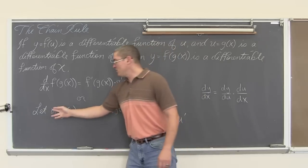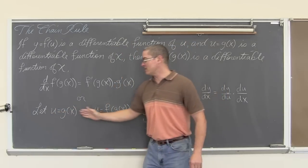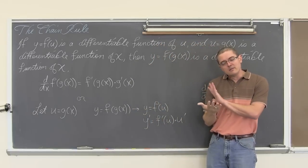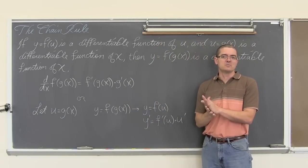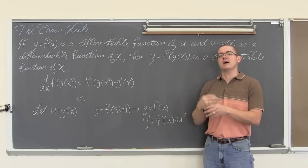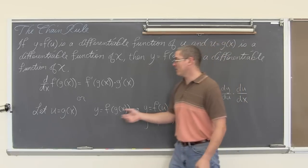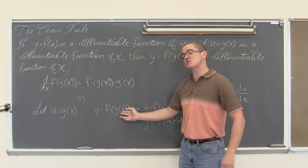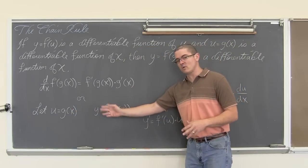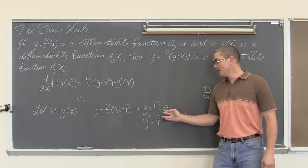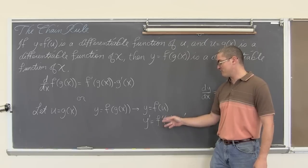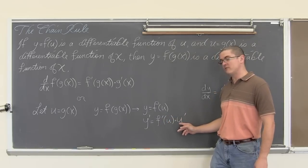Or, we let u equal g of x — we can do a substitution like this to make the question... rewriting the function, just making it look a little bit simpler, helps you understand how to work through the problem. So you can do a temporary substitution where you go, ok, let g of x, maybe it is a really complicated function inside of another one, let's let g of x simply equal u. Well, then we have y prime, the derivative of y, is equal to f prime of u times the derivative of u.